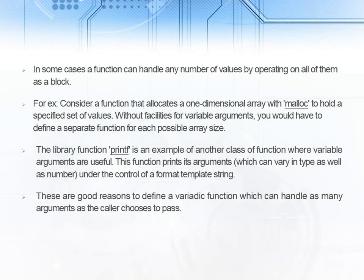In some cases a function can handle any number of values. Let us take a very good example: malloc. Malloc is a function that is used to allocate memory to one dimensional array, two dimensional array, or any multidimensional array which can hold a specific set of values. Without facilities for variable arguments you have to define a separate function for each possible array size.